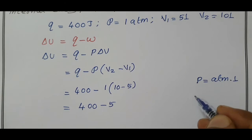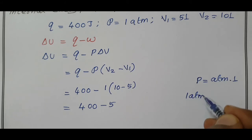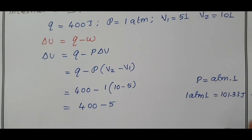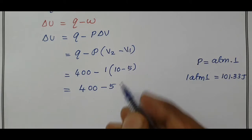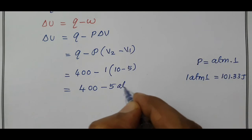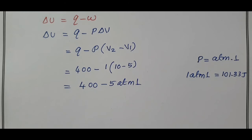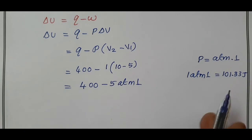One atmosphere liter is equal to 101.33 Joules. Here, the unit is 5 atm liter. To convert the atmospheric liter into Joules,